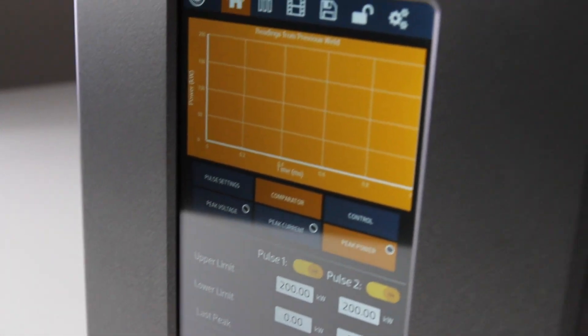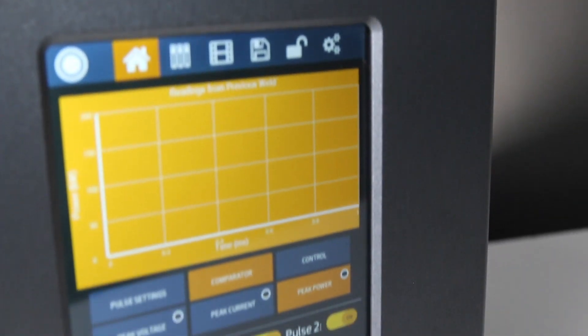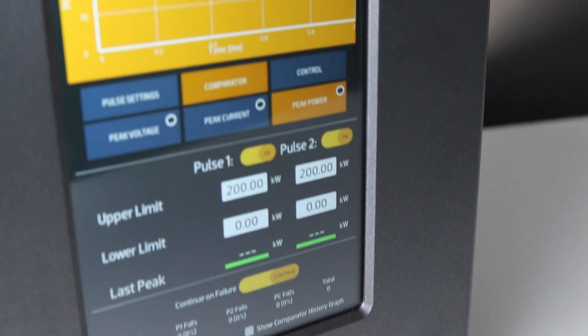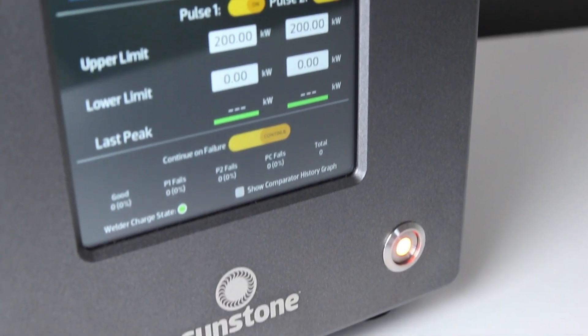We engineered the CDDPA to include all of these features built into a single system without any need for additional power supplies, monitors, or controllers. The CDDPA is also equipped with an 8-inch full-color touchscreen display, giving users a simple way to control their entire welding process.